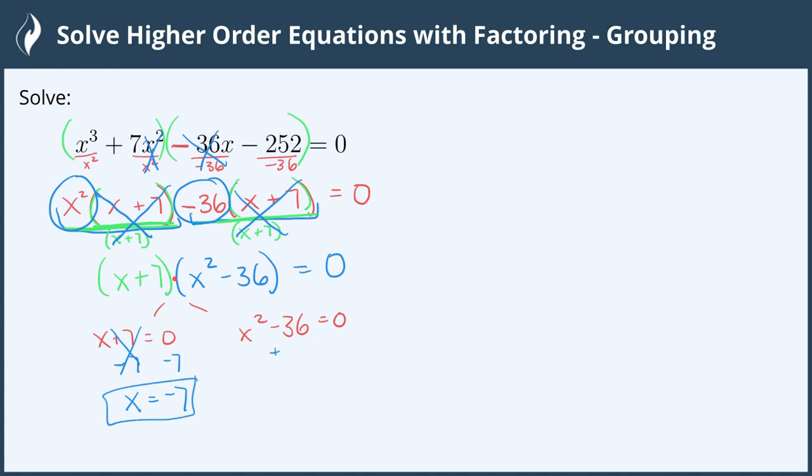On the right side, we add 36 to both sides, giving us x² = 36. To undo the square, we take the square root of both sides. What we do to the left we must do to the right, so we square root 36. When we square root a number, we get a positive or negative answer. The square root of 36 is 6, so we get x = ±6.